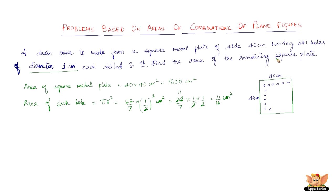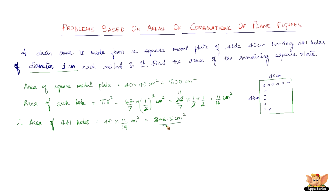This is the area of one such hole. We need to find the area of 441 such holes, so all we have to do is multiply 11/14 by 441. Therefore, the area of 441 holes equals 441 times 11/14 cm², which equals 346.5 cm². This is the area of 441 holes drilled in the square plate of side 40 cm.